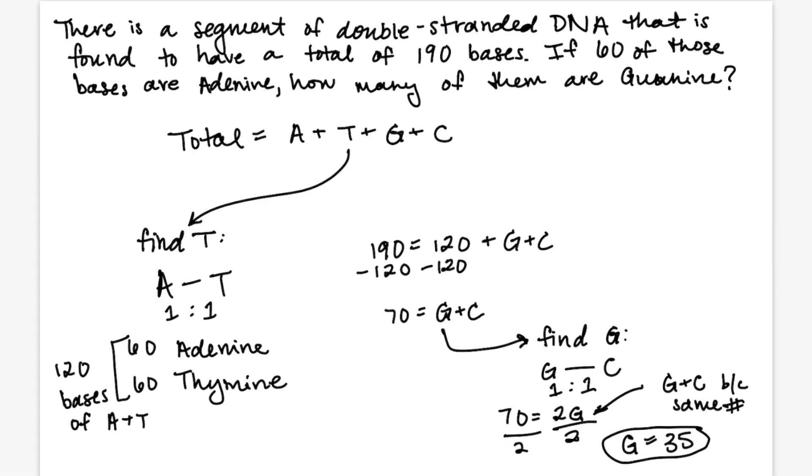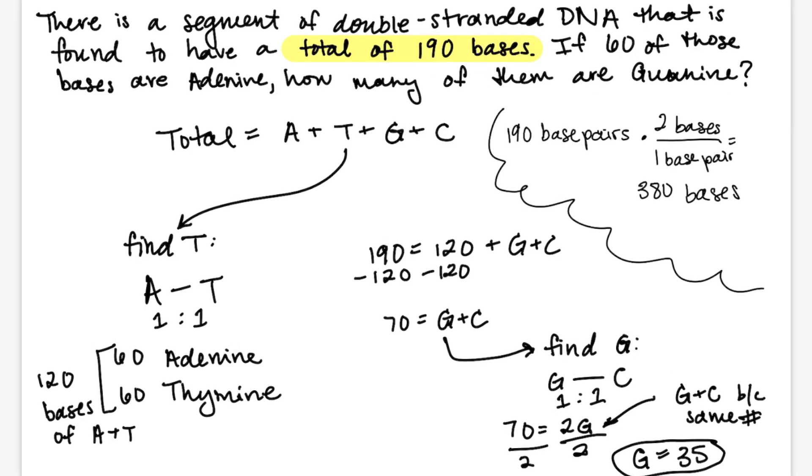The second thing I wanted to point out was that this question included that there were a total of 190 bases and not 190 base pairs. If the question had given that there are 190 base pairs, then that means there would be 380 bases, because you multiply the number of base pairs by 2 since there are 2 bases in a pair. You can solve for guanine the same way, and you would get that guanine equals 130 instead.